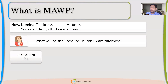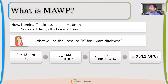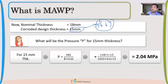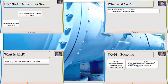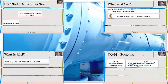So for 15 mm after corrosion — since 14.67 mm was the required thickness and we took 15 mm — there's a little margin, and that's the reason the vessel can take 2.04 MPa instead of exactly 2 MPa. In simple terms, MAWP is the maximum pressure-taking capability of the pressure vessel or component. Please do watch our video on 'How to Derive MAWP with Static Head.'